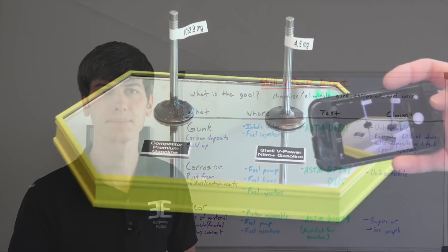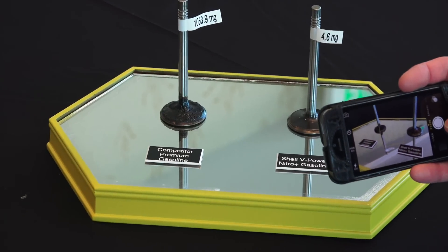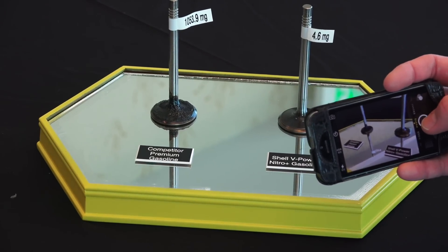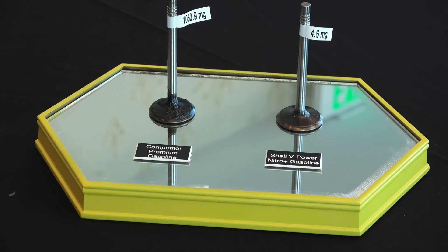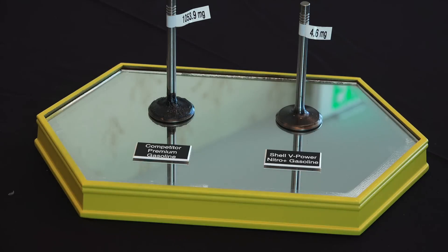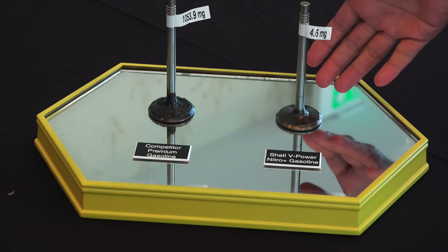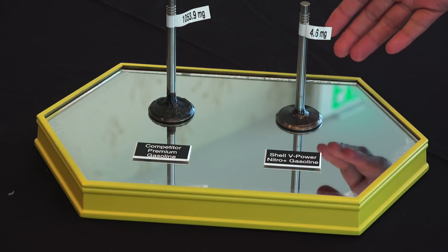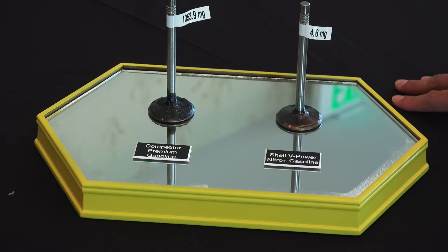So on the left side we have a competitor premium gasoline that's been used, sold in the U.S. market. This is a U.S. market competitor over 5,000 miles, and in a relatively short amount of time you've got a significant amount of gunk buildup essentially. With the Shell V-Power Nitro Plus gasoline, to Todd's point earlier on detergency, we keep this clean. We offer unbeatable protection against gunk. Translation of that is you can't get cleaner than clean.